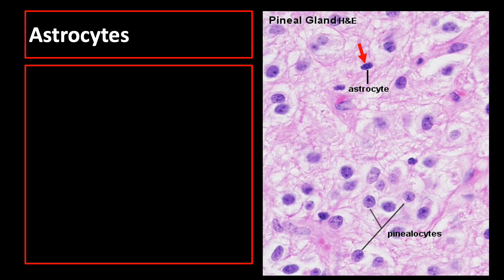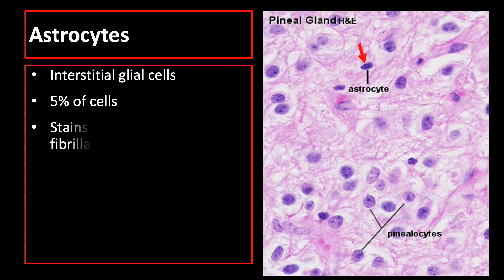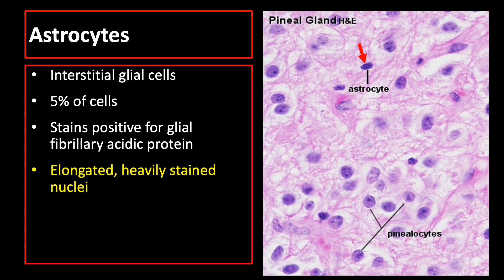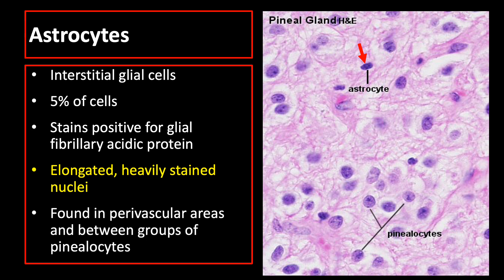The pineal gland also has interstitial glial cells, as pointed by the red arrow in the picture, that are modified astrocytes representing 5% of cells in the pineal gland. These cells stain positively for glial fibrillary acidic protein and have elongated nuclei more heavily stained than those of pinealocytes, and are usually found in perivascular areas and between the groups of pinealocytes.